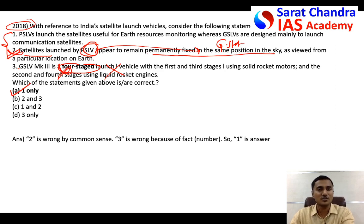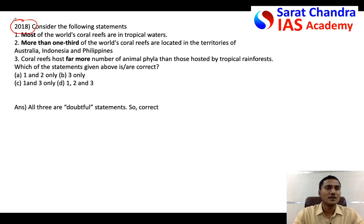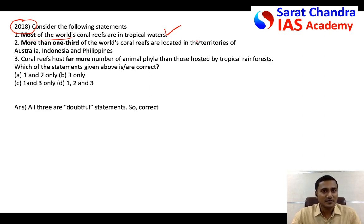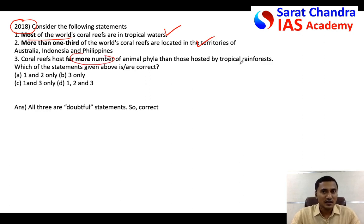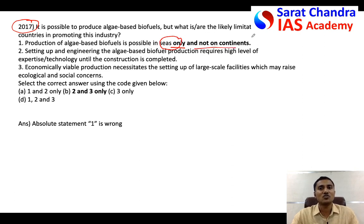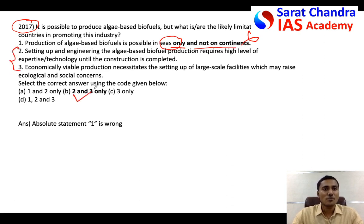For example, in this question: 'most of the world's' — not 'entire world's' — that is a doubtful statement, so it is correct. 'More than one third' — not specifying exactly two-fifths or three-sixths — so it is correct as a doubtful statement. Similarly, 'only in the seas, not on the continents' — that absolute 'only' makes it wrong. So the answer is statements two and three.